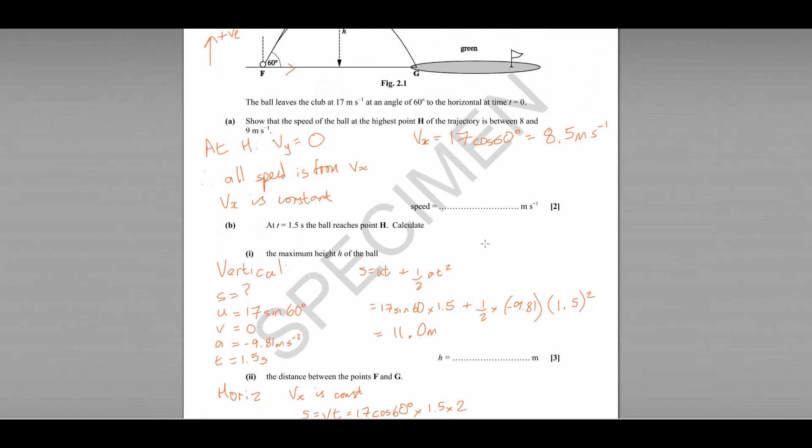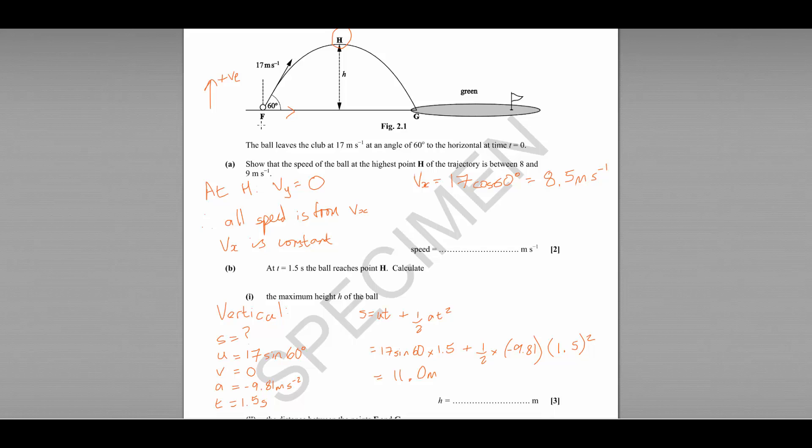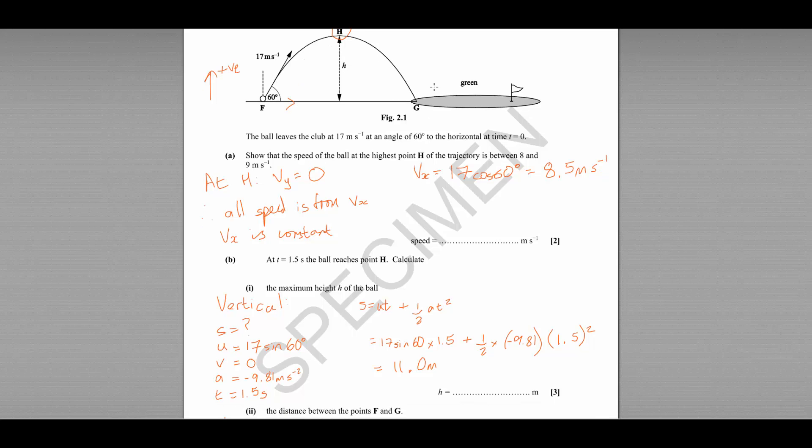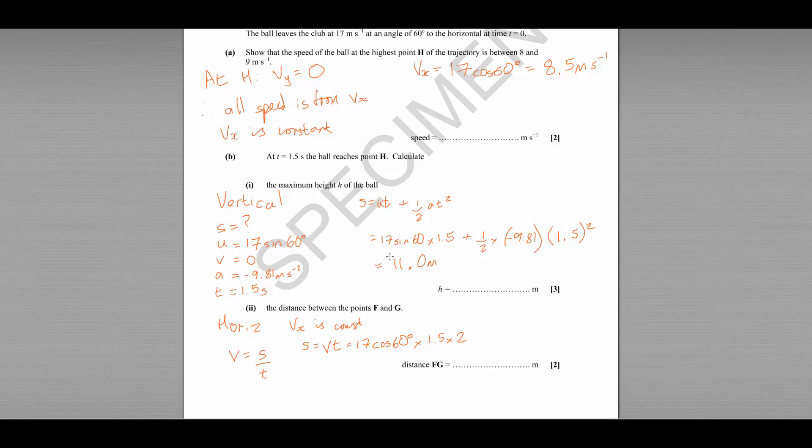If we just look back at the diagram, we know that it takes 1.5 seconds to get from F to H. This is a symmetrical journey. There's no air resistance acting. So it will take a further 1.5 seconds to get to G. So our T here is 1.5 times 2, 3 seconds. So we multiply this out and we will find the horizontal distance is 25.5 metres.